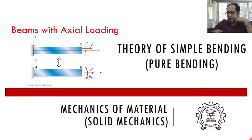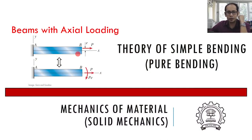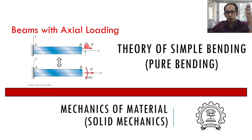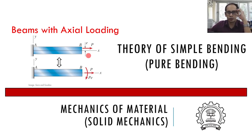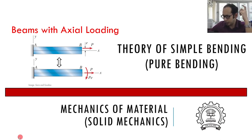We are essentially looking at beams with axial loading. If you have a beam where a load is acting, you can replace that load with an equivalent load acting at the centroid plus a moment depending upon the eccentricity. This is one case where axial loading also causes a moment. Another case is where a moment is already being applied and on top of that you are applying an axial load.